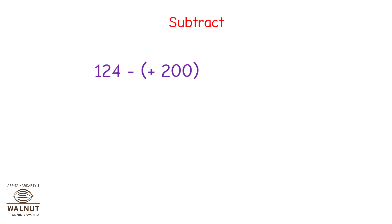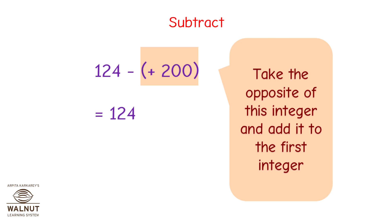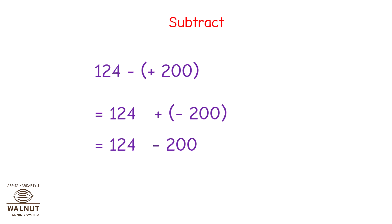Let us do this subtraction problem. We have 124 minus positive 200. We write the first integer as it is, then we take the opposite of the second integer and add it to the first. Now we solve: this becomes 124 minus 200, which is minus 76.